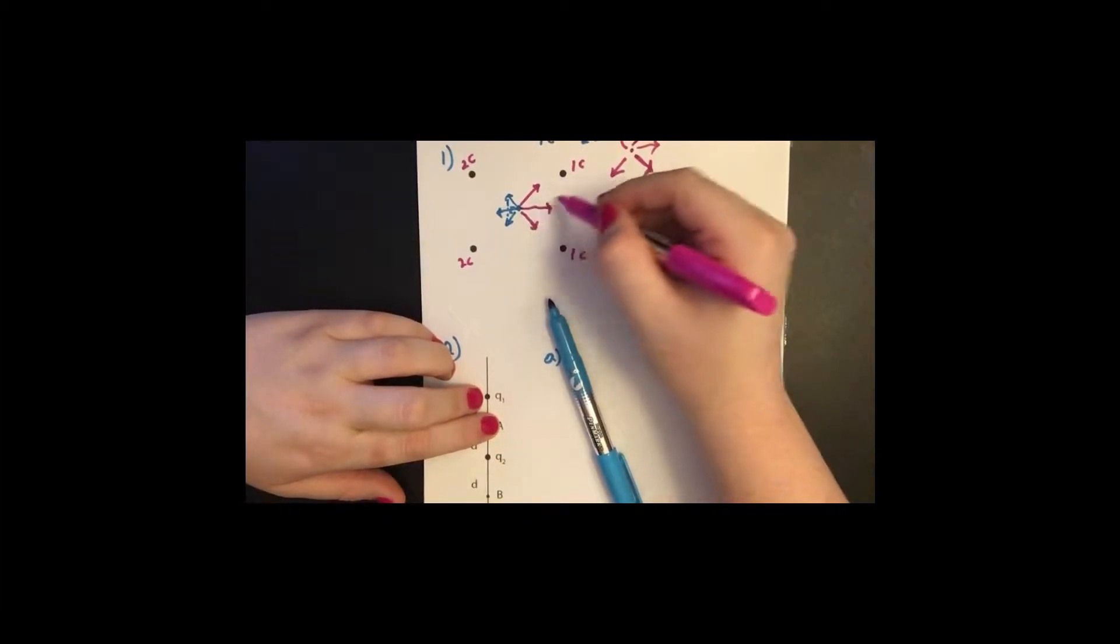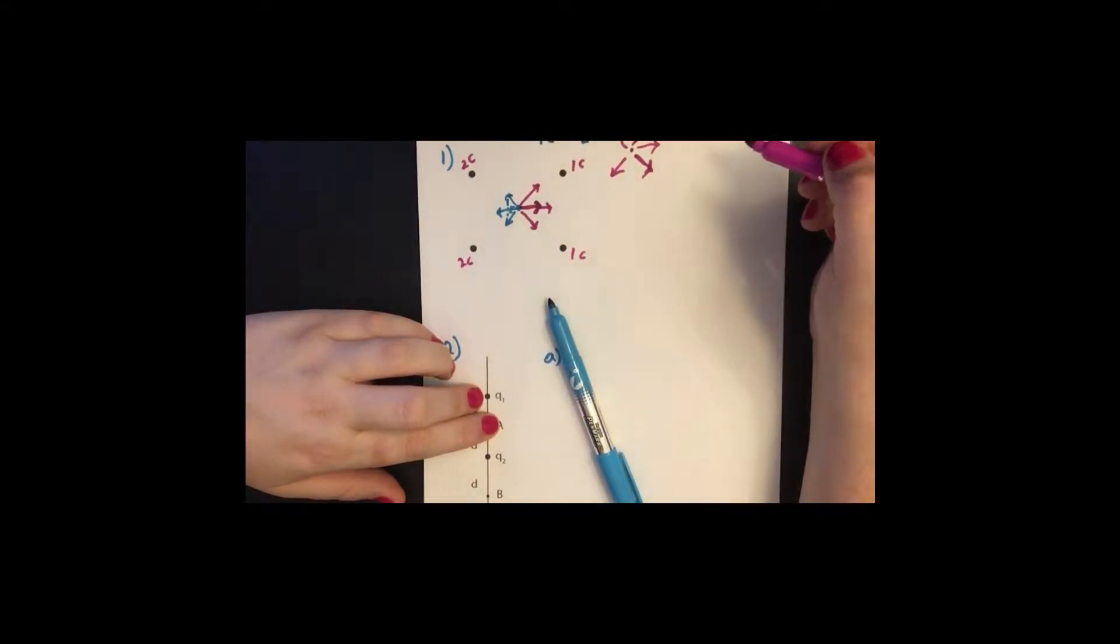But this net to the right, because the two coulombs are bigger, is bigger than the net to the left. So we still end up with a component, after these two subtract from each other, that is still to the right.